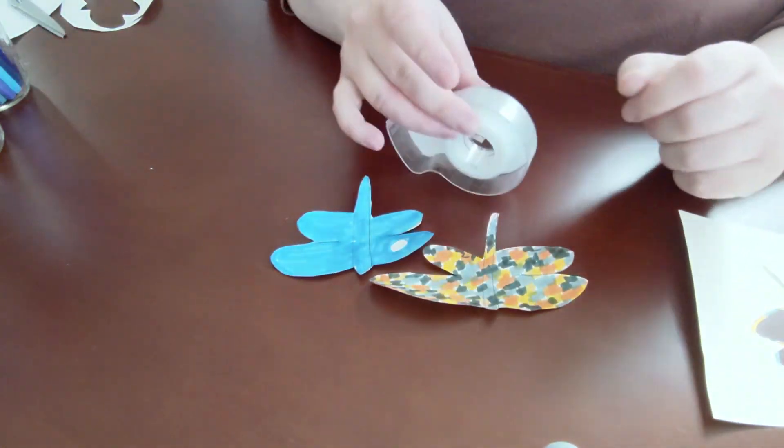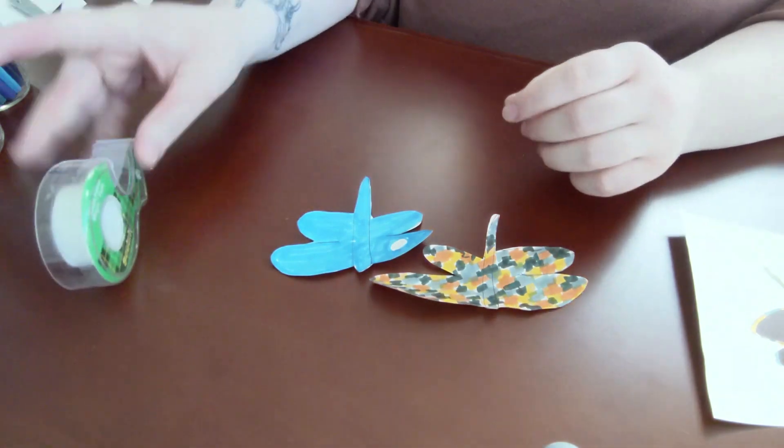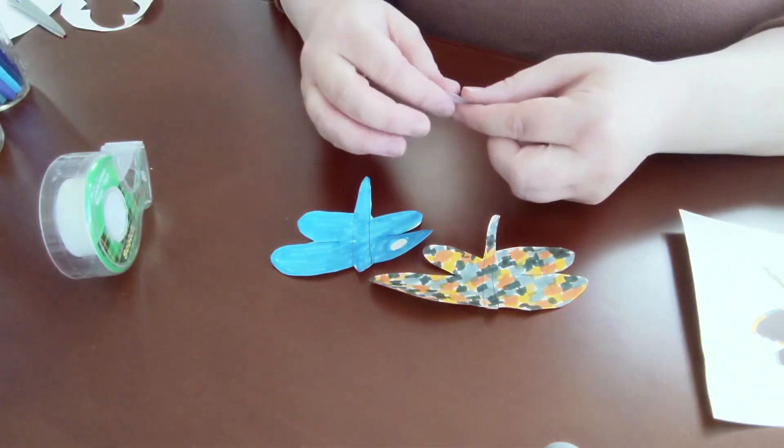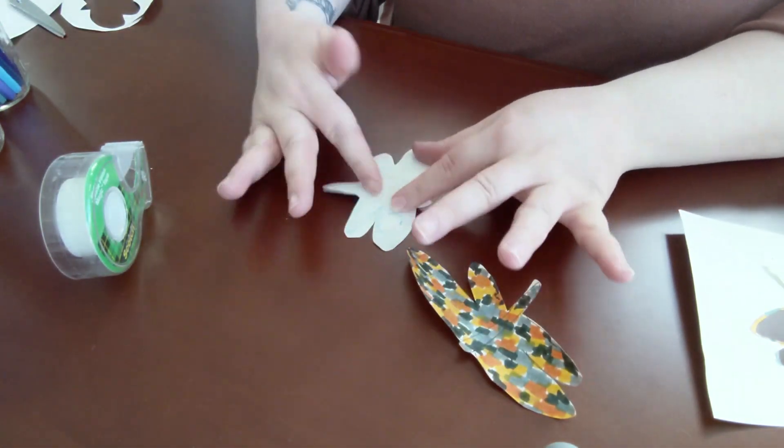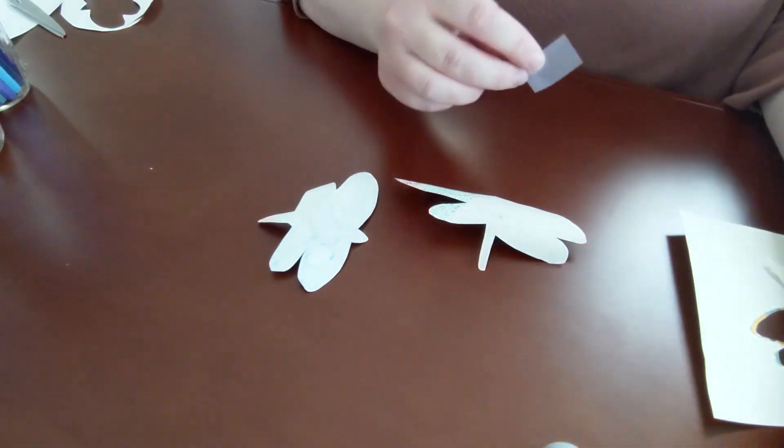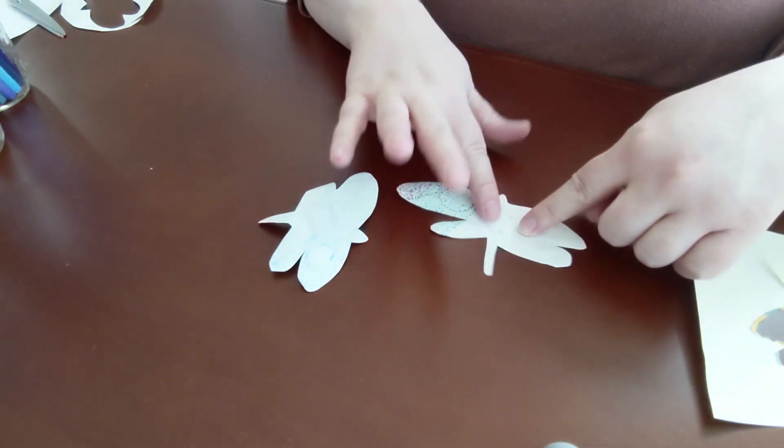So now that my moths are cut out, I'm going to put a little piece of tape on them. You don't have to. You can also just set them down somewhere. You don't have to tape them to something, but the tape would help it stick, especially if you want to put them on your wall.